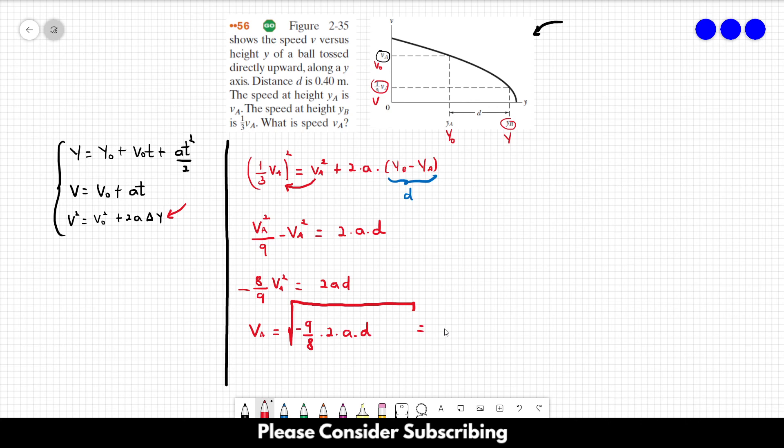And this is equal to the square root of minus 9 over 8 times 2 times minus 9.8 times 0.4. If you do the calculation, you will find roughly 3 meters per second, and this is the answer to this exercise.